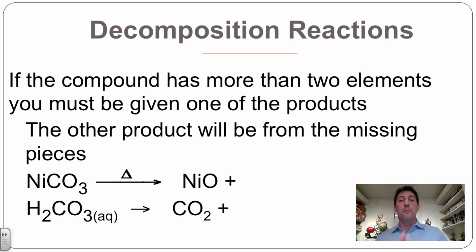If the compound has more than two elements, you must be given one of the products, at least at this stage in the game, because it's almost impossible to be able to predict what's going to happen. You'll learn that later on.